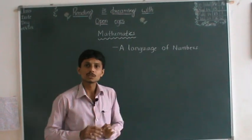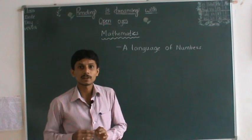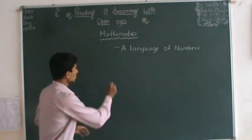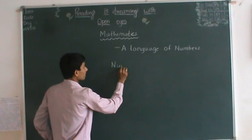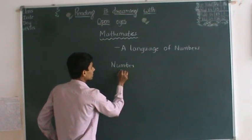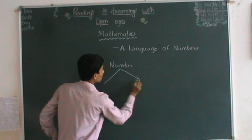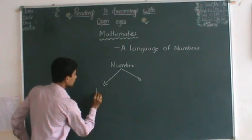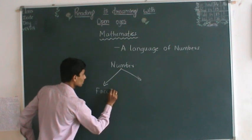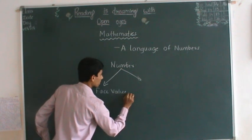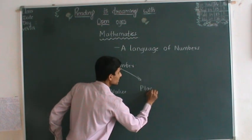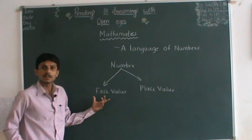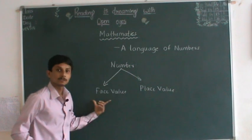There are two ways of representing or identifying numbers in terms of value. Numbers can be classified by two value concepts: one is the face value, and another one is the place value.